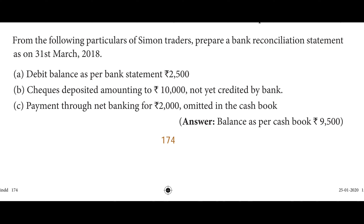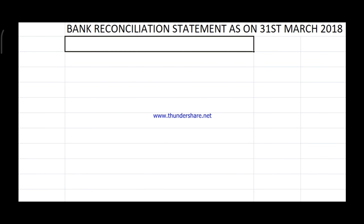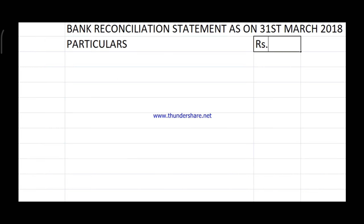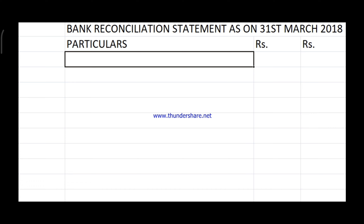This is one of the most easy Bank Reconciliation Statement sums and it is an unfavorable balance sum. First we're going to type out the heading: Bank Reconciliation Statement as on 31st March 2018. The first item given is debit balance as per bank statement, so we'll set up the format with columns for particulars, rupees, rupees, and enter the debit balance as per bank statement which is 2,500.